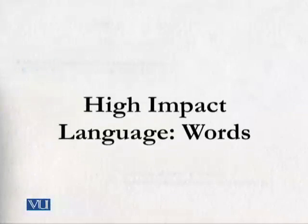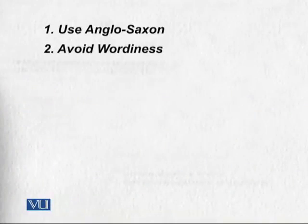When choosing between two words, ask yourself: is it Anglo-Saxon — is it short and familiar? If yes, choose that. If not, chances are it's a Latinate word that only educated readers can understand; a common reader will find it difficult. The second point in high impact word is: avoid wordiness. Use one-word substitutions. For example, 'along the lines' can be replaced with 'according to'; 'at this time' can be replaced with 'now.'